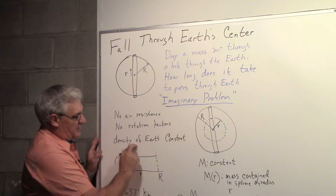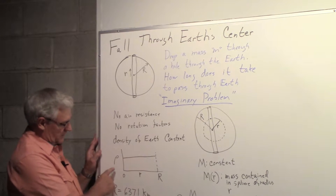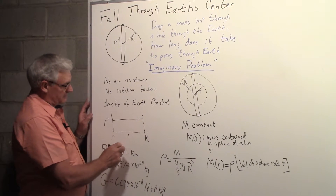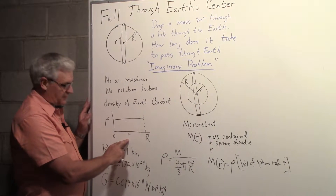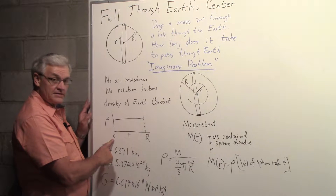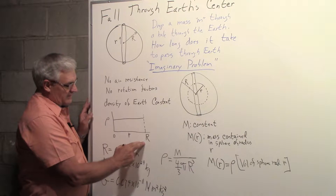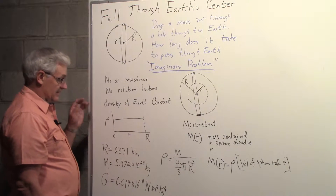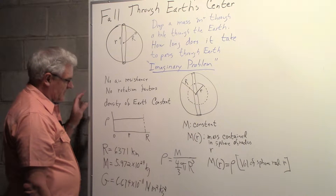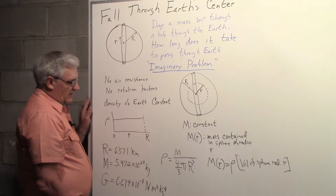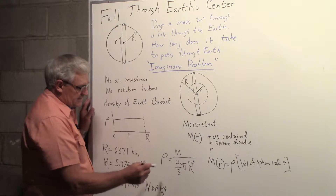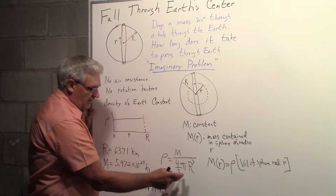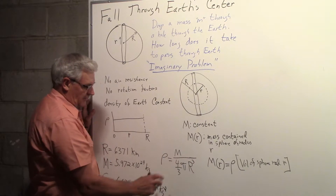We're also going to assume that the density of the Earth is constant. If you look at density as a function of distance from the center — using small r measured from the center, going from distance 0 out to the surface at distance R — we're saying the density is constant throughout. So the density of the Earth can be written as M, the mass of the Earth, divided by (4/3)πR³, the volume of the Earth.